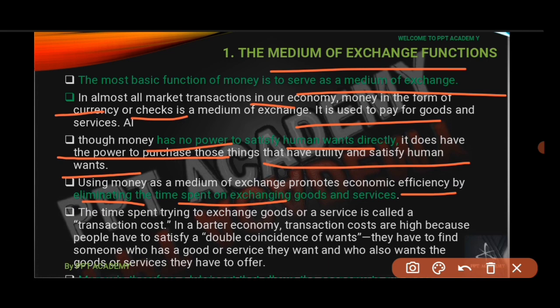Money provides time-saving options in exchange — not only in the selling of the exchange, but also after the trading process, making it a very valuable asset. The time spent trying to exchange goods and services is called transaction cost. In part of the economy, transaction costs are high because people have to satisfy a double coincidence of wants.